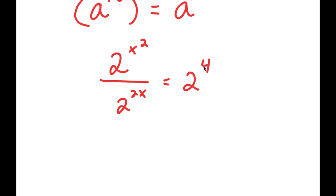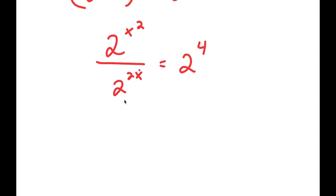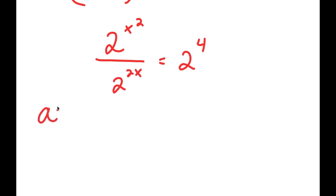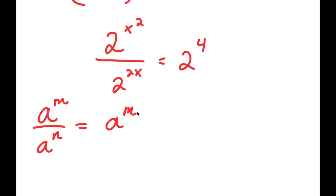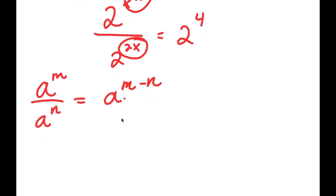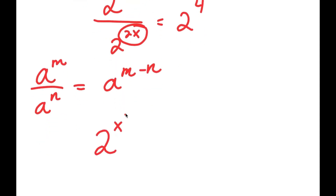Now from here, if I have something in the form a to the power of m over a to the power of n, this is equal to a to the power of m minus n. So in this case, m is x squared and n is 2x. So I get 2 to the power of x squared minus 2x is equal to 2 to the power of 4.